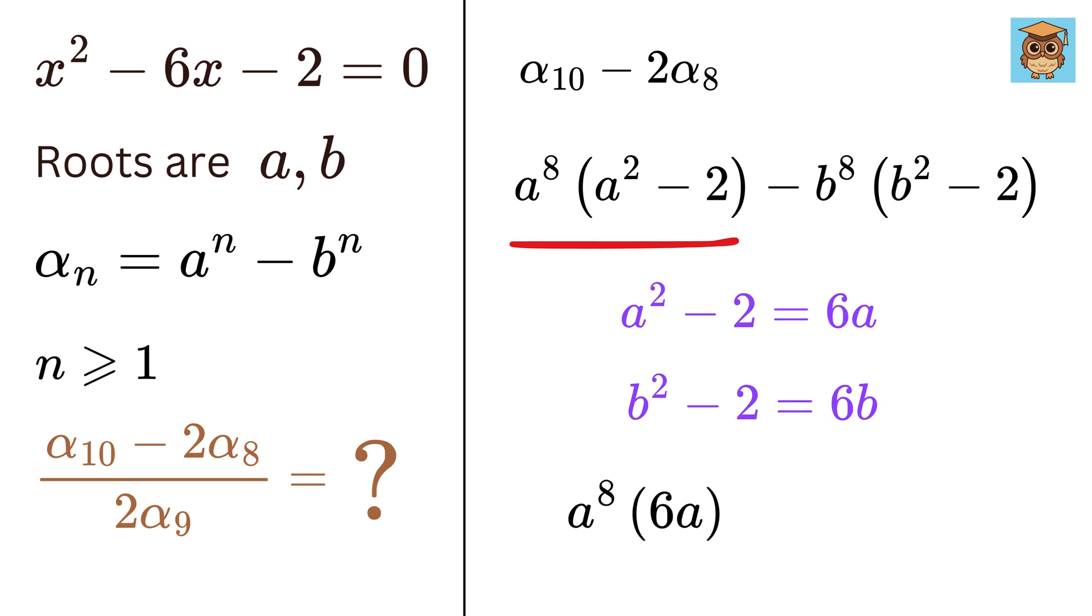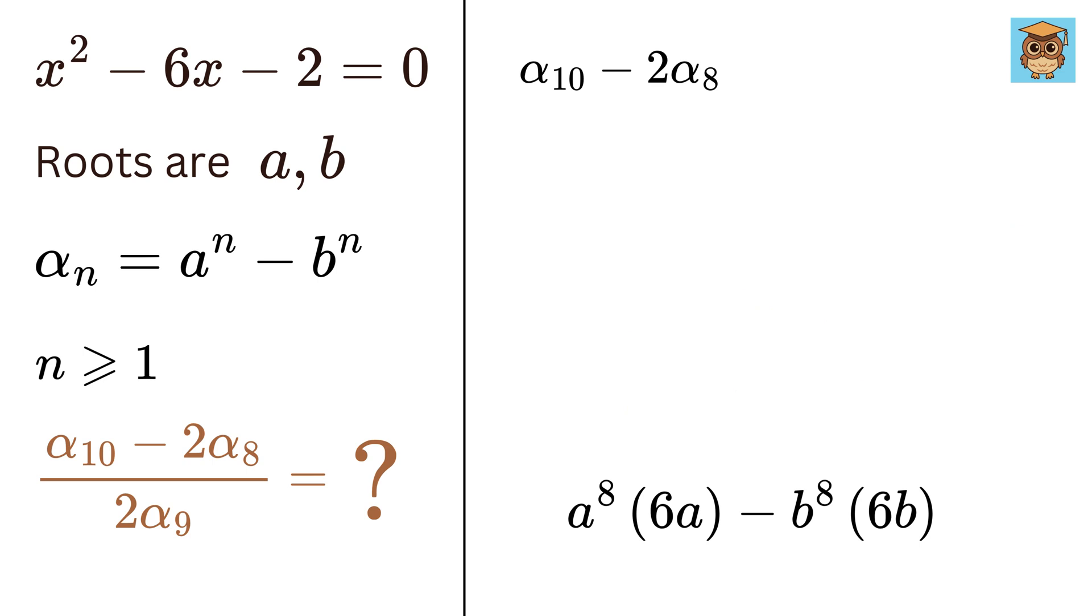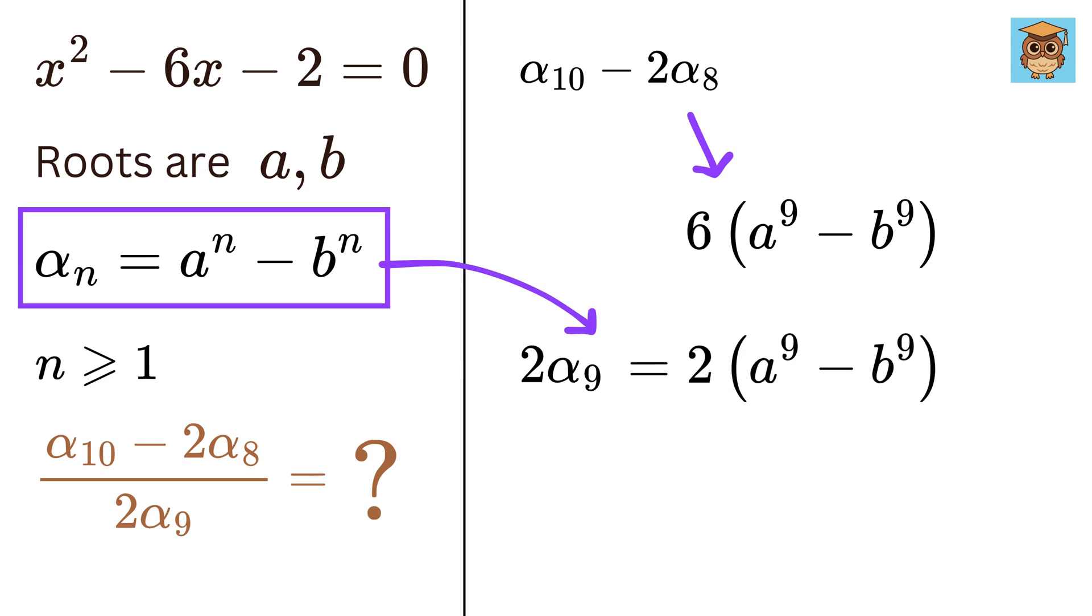So this will become a^8(6a) - b^8(6b). Simplifying it, we get 6(a^9 - b^9). And the denominator is 2α_9, so the denominator will become 2(a^9 - b^9).